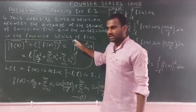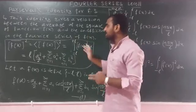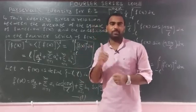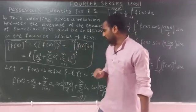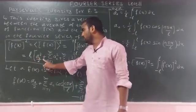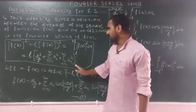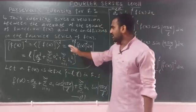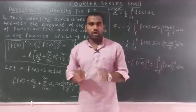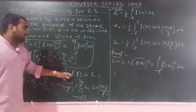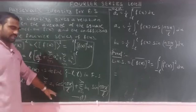The average of the square of a function f(x) defined from minus l to l means (1/l) times the integral from minus l to l of [f(x)]² dx, and this equals (1/l) times l into [a₀²/2 + summation from n=1 to infinity of aₙ² + summation from n=1 to infinity of bₙ²]. This is Parseval's identity, relating the Fourier coefficients a₀, aₙ, bₙ to the average square of the function.